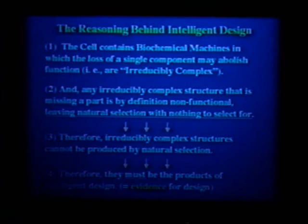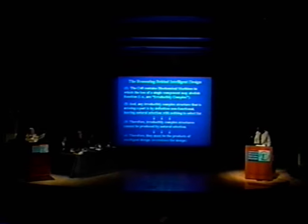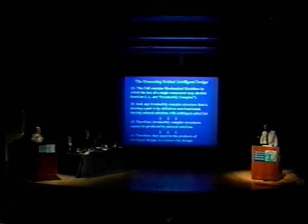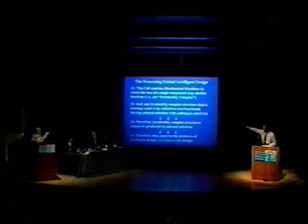Number two: you said that any irreducibly complex structure that is missing a part is by definition non-functional, and that leaves natural selection with nothing to select for. You agree that's an important part of the reasoning? No, the underlying part — those are your words, not mine. We've done this before, Ken and I, a number of times, and he's going to say there are other functions that can be selected for.